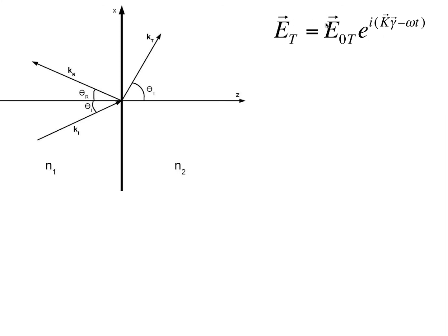Here, Et is the electric field vector, E naught t is the constant electric field vector amplitude, k is the propagation coefficient, and gamma is the position vector. The omega is the frequency of the light used.